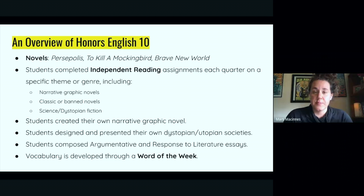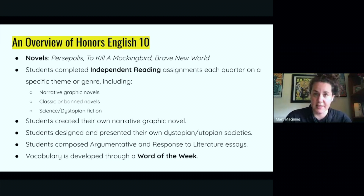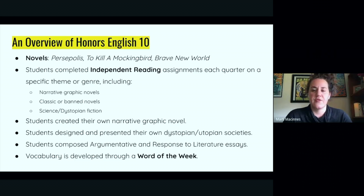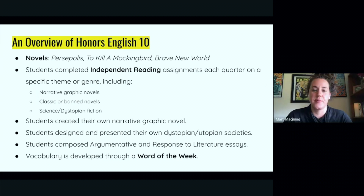The assessments per quarter vary. In the fall, students create their own narrative graphic novel — they tell a story about themselves through image. They were fantastic this year; I was so proud. Later on, usually in groups but they can work by themselves, students design and present their own dystopian or utopian society after reading Brave New World and doing a lot of research. And obviously, we write essays — it's honors English. Students compose an argumentative paper about To Kill a Mockingbird and a responsive literature paper about Brave New World, so we get practice with all those genres of writing.